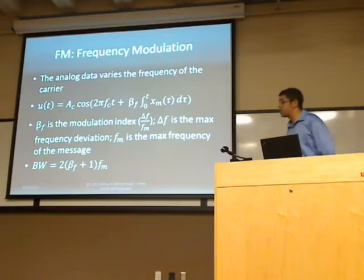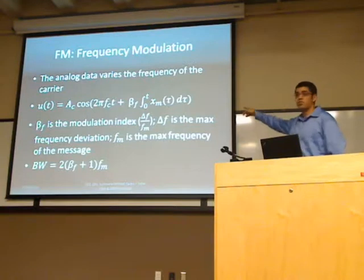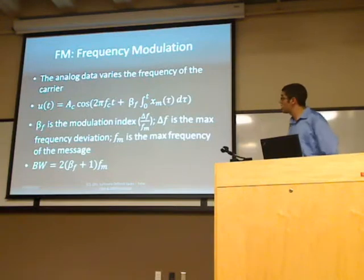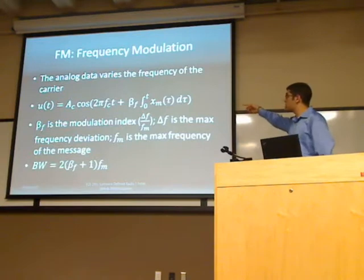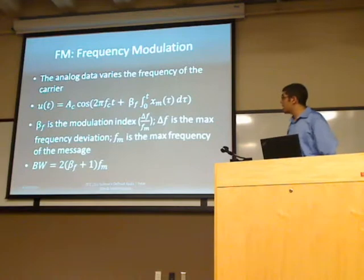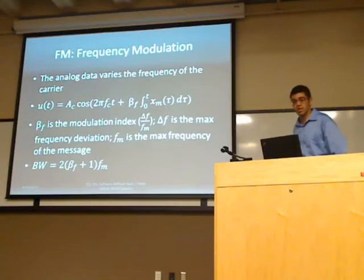First, frequency modulation — something we implemented during our project. The analog data you're trying to send varies the frequency of the waveform according to this equation. That's implemented in DSP using an accumulator, which does the integration, and the multiplication happens automatically. These are the parameters of the equation that we set in GNU radio when transmitting, including the bandwidth.